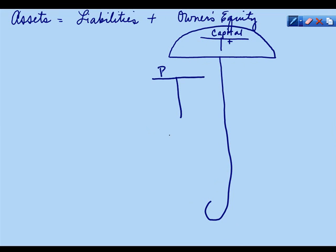First of all, we're going to start out with a brand new account that we're going to call Purchases, and it's going to be handled just like an expense with a debit balance, increasing on the debit side.